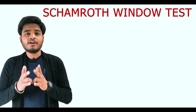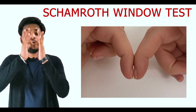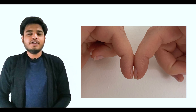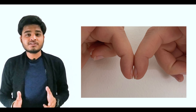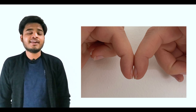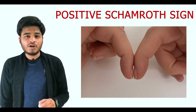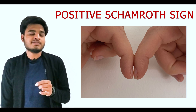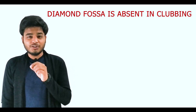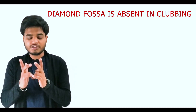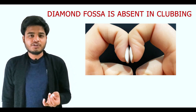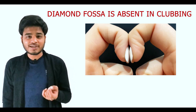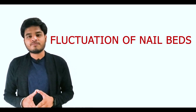Clubbing can also be assessed by asking the patient to place corresponding ring fingers together and look for the normal diamond-shaped space between them. If the normal diamond-shaped space is present, it means there is no clubbing — this is called a positive Schamroth sign or Schamroth window. In clubbing, there is an obliteration of this normal diamond-shaped space, referred to as the absence of the Schamroth sign or Schamroth window.